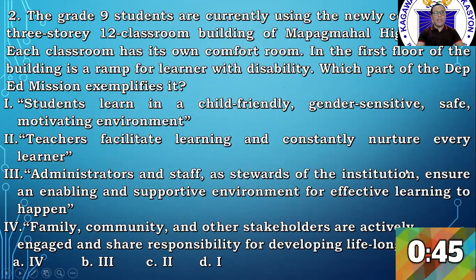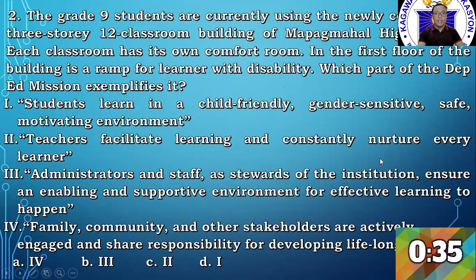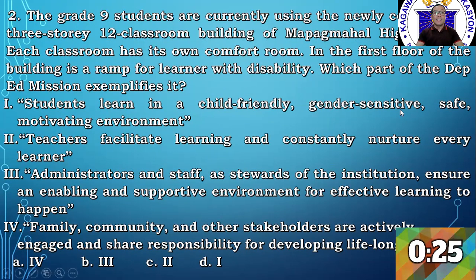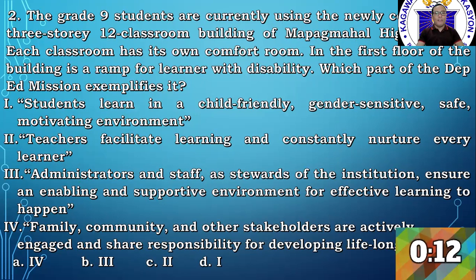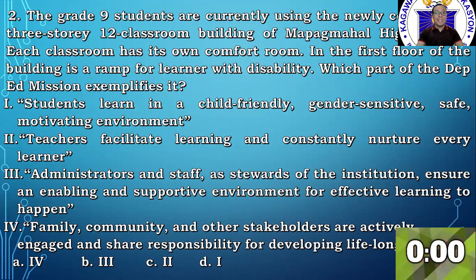Question number 2. The grade 9 students are currently using the newly constructed 3-story 12-classroom building of Mapagmahal High School. Each classroom has its own comfort room. In the first floor of the building is a ramp for learners with disability. Which part of the DepEd mission exemplifies it? 1. Students learn in a child-friendly, gender-sensitive, safe, motivating environment. 2. Teachers facilitate learning and constantly nurture every learner. 3. Administrators and staff as team members of the institution ensure an enabling and supportive environment for effective learning to happen. 4. Family, community, and other stakeholders are actively engaged in your responsibility for developing lifelong learners. A4, B3, C2, D1.